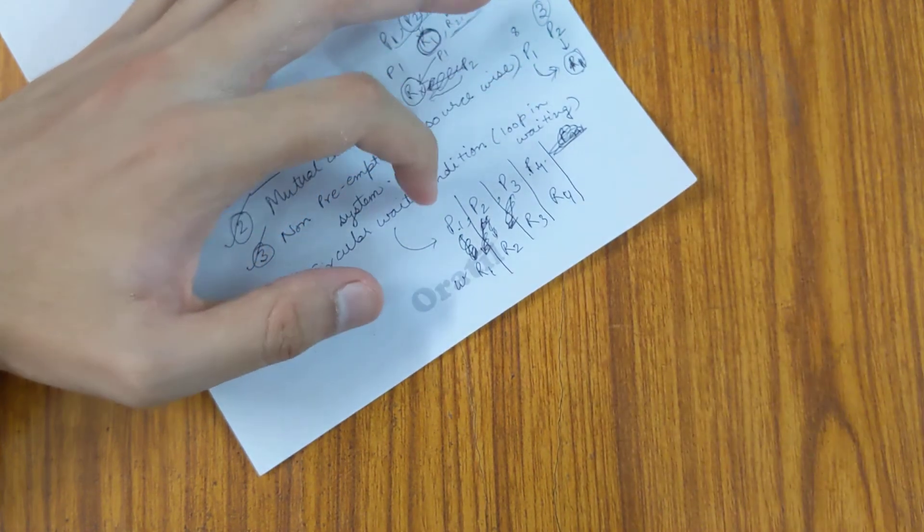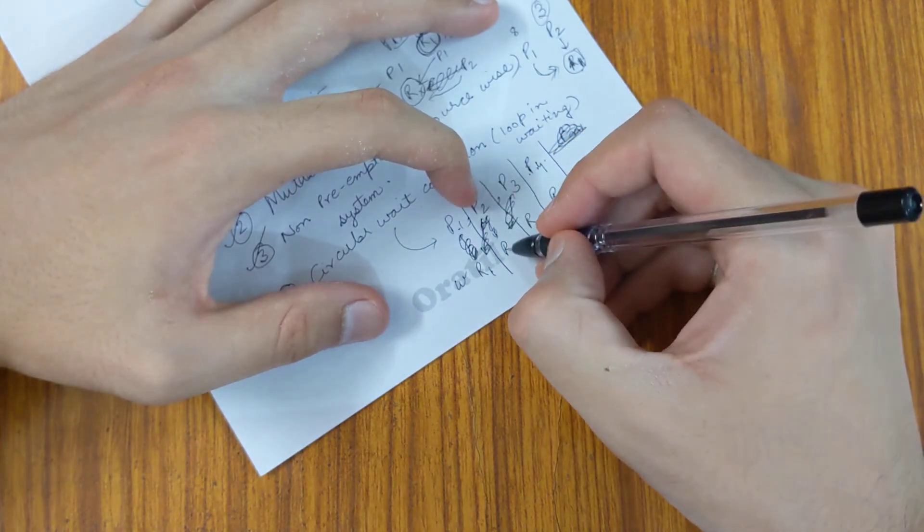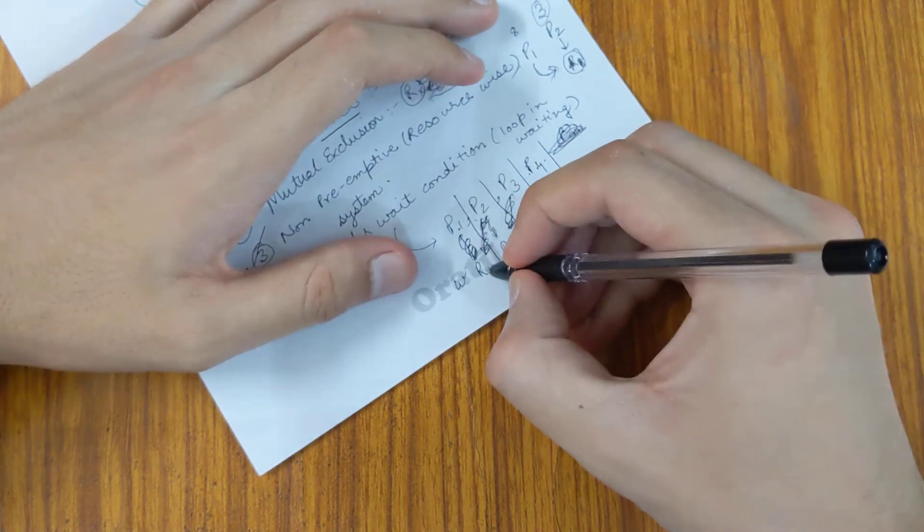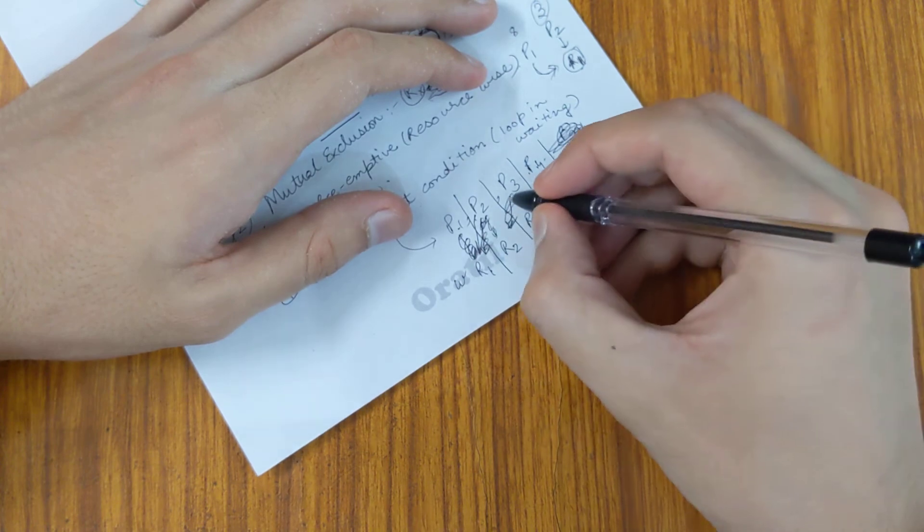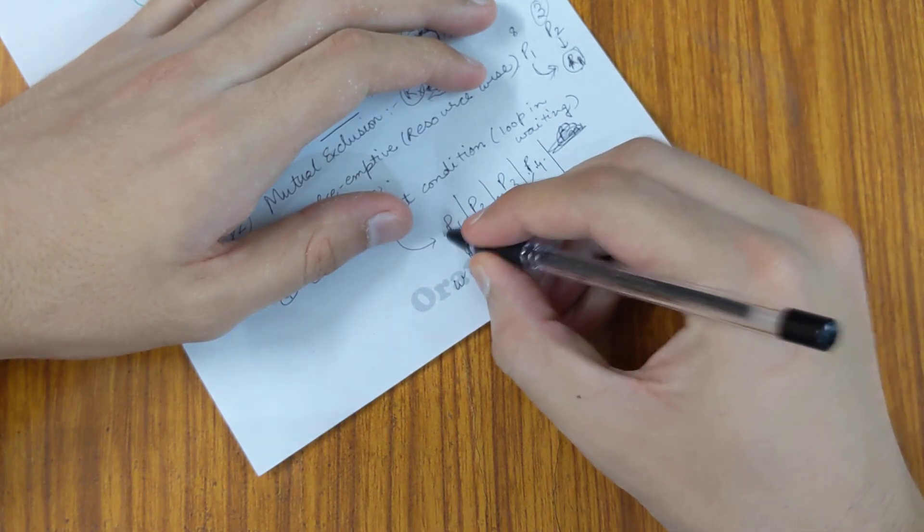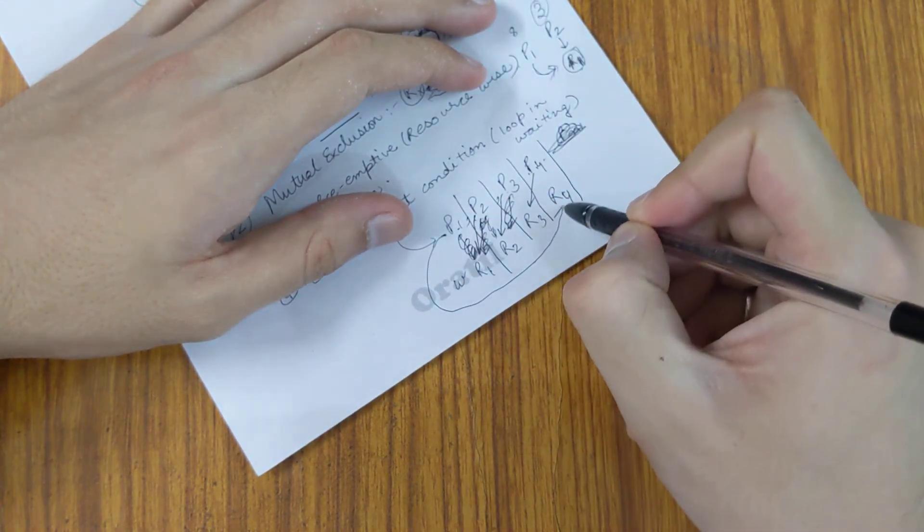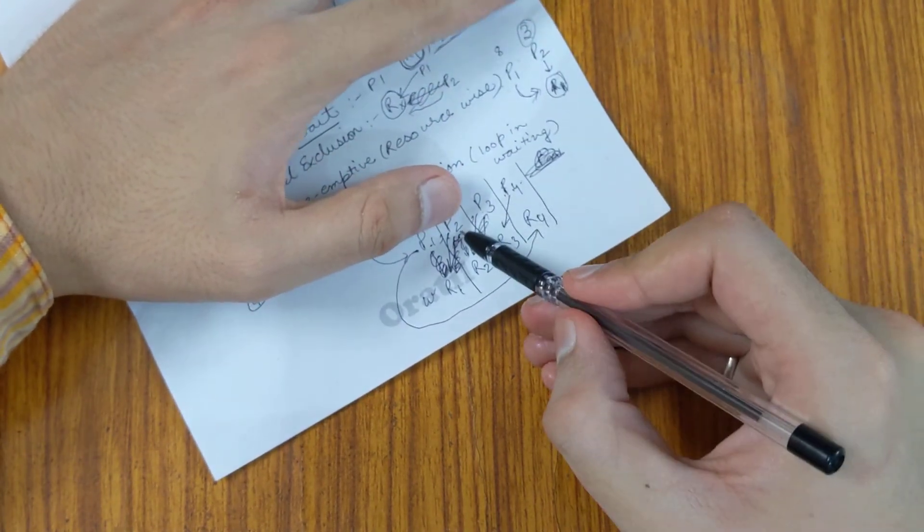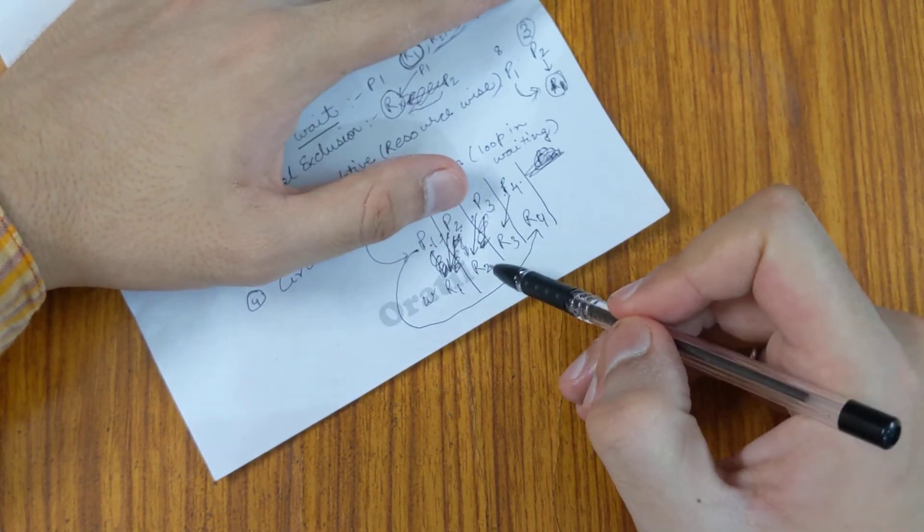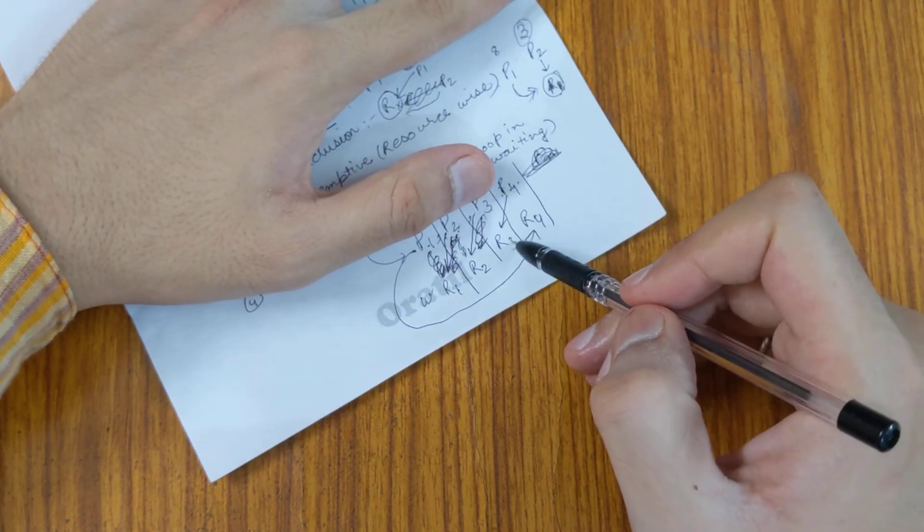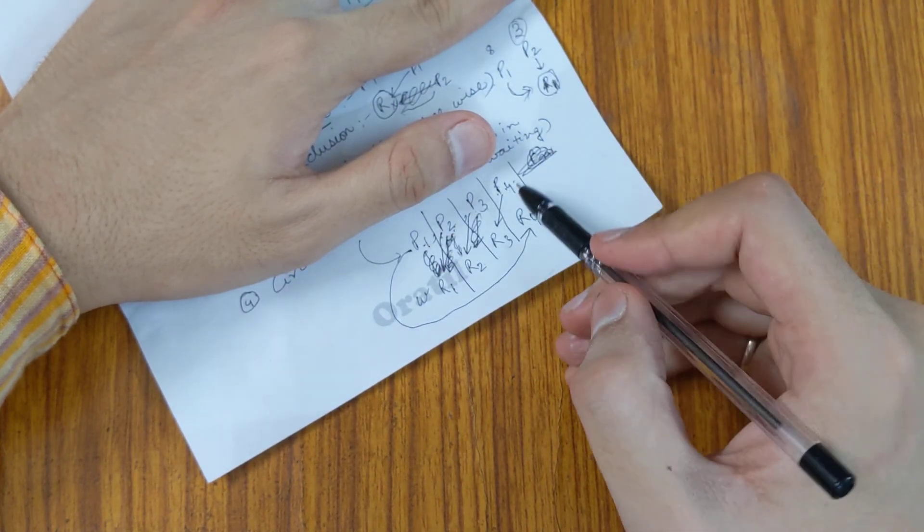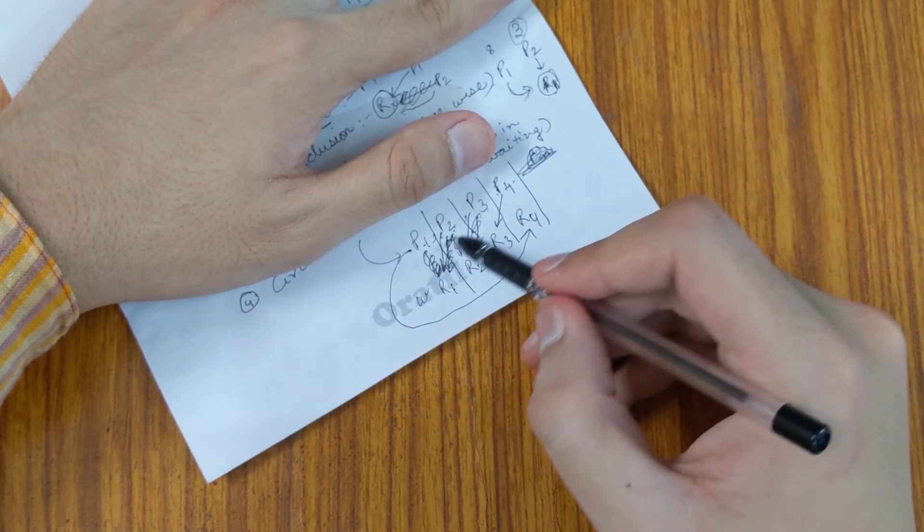P2 requires R1, P3 requires R2, P4 requires R3, and P1 requires R4. This is a circular loop example because P2 will be unblocked once R1 is released by P1, P3 will be unblocked once R2 is released by P2, P4 will be unblocked once R3 is released by P3, but P1 will be unblocked when P4 releases R4. None of these can proceed because...